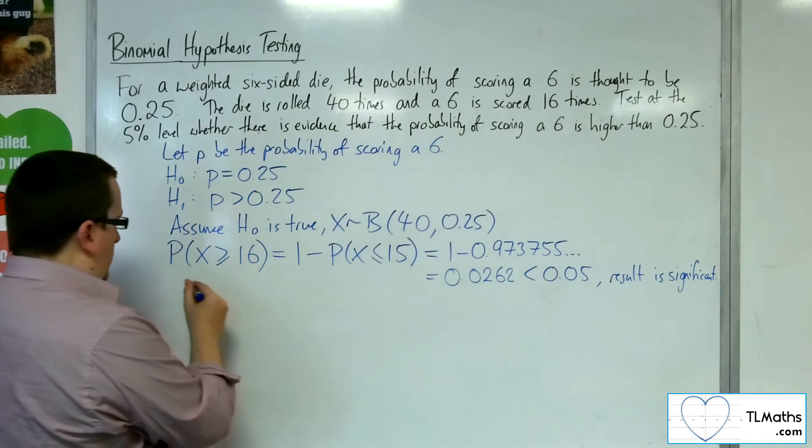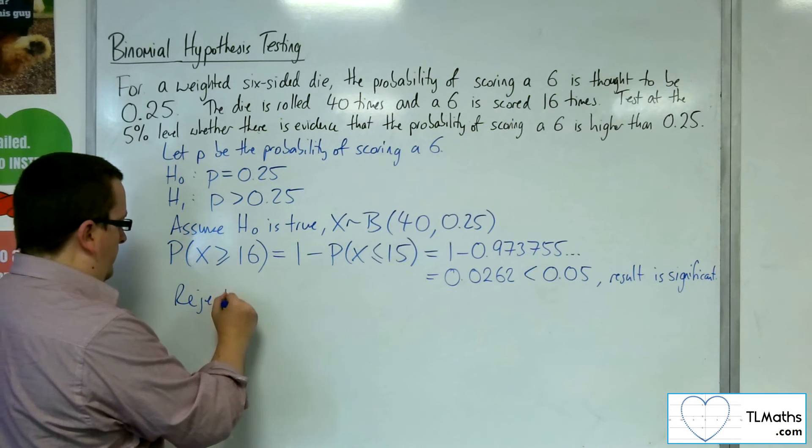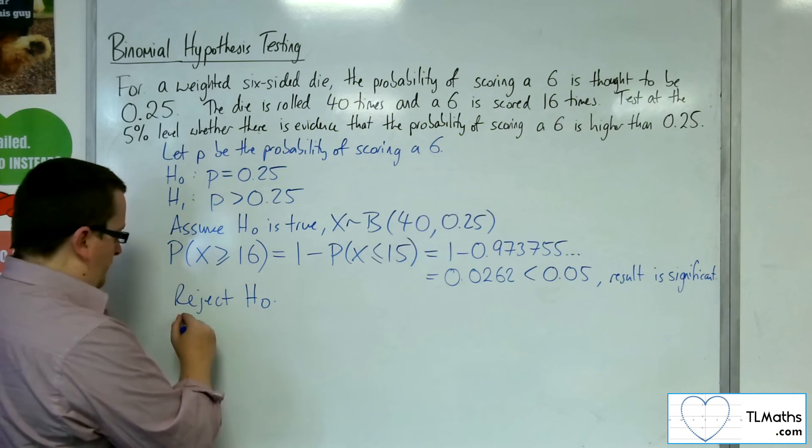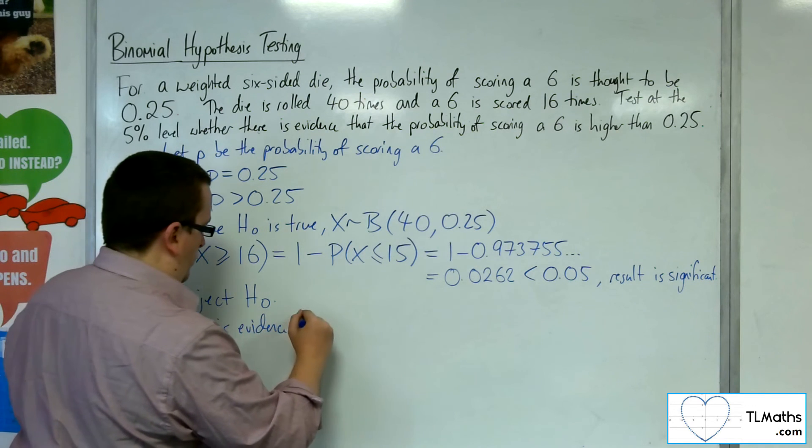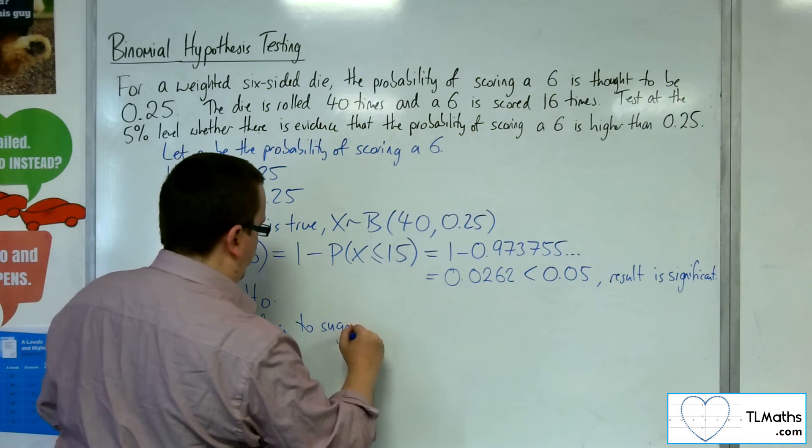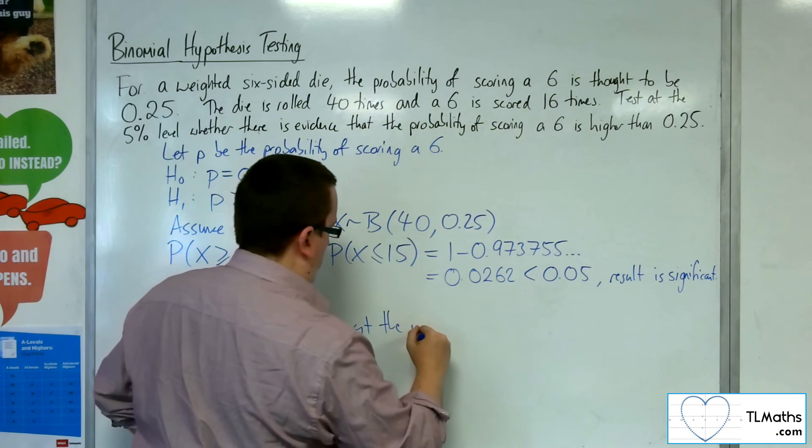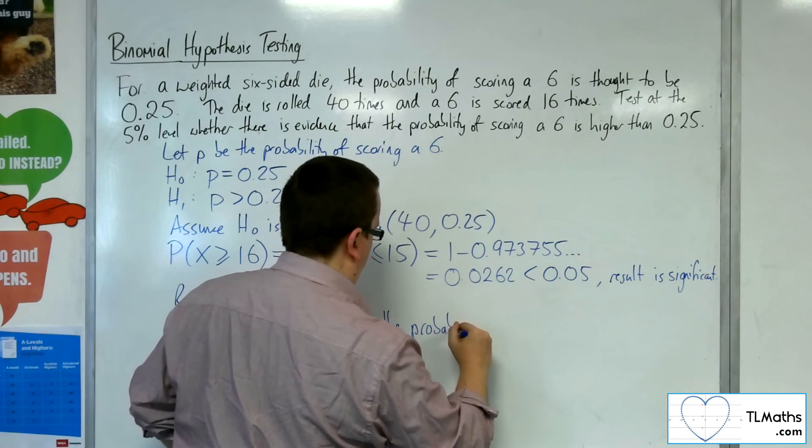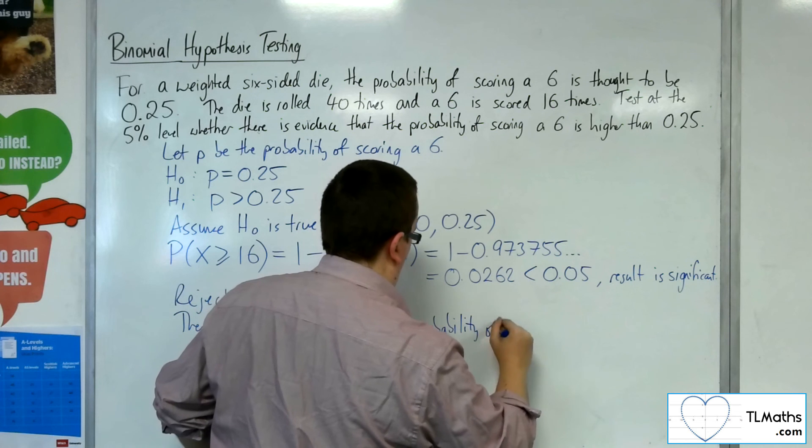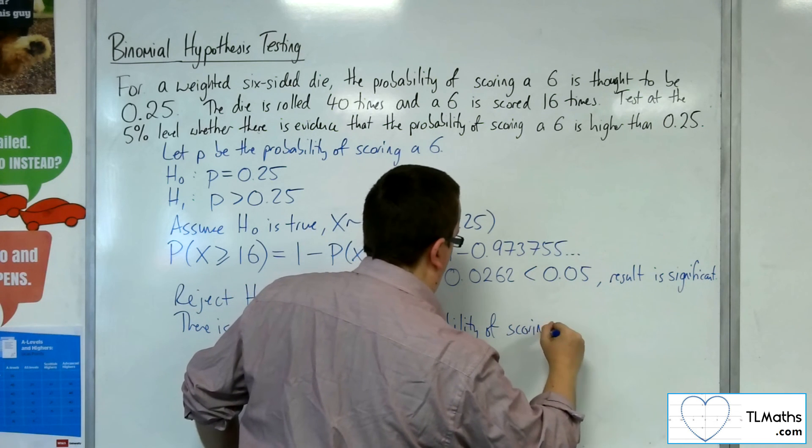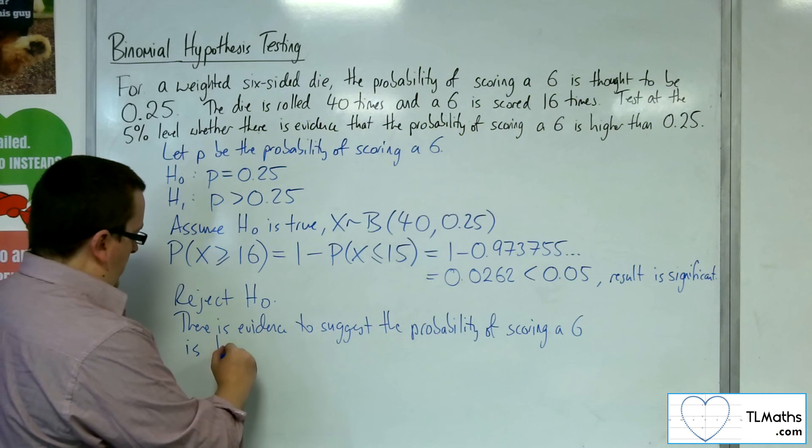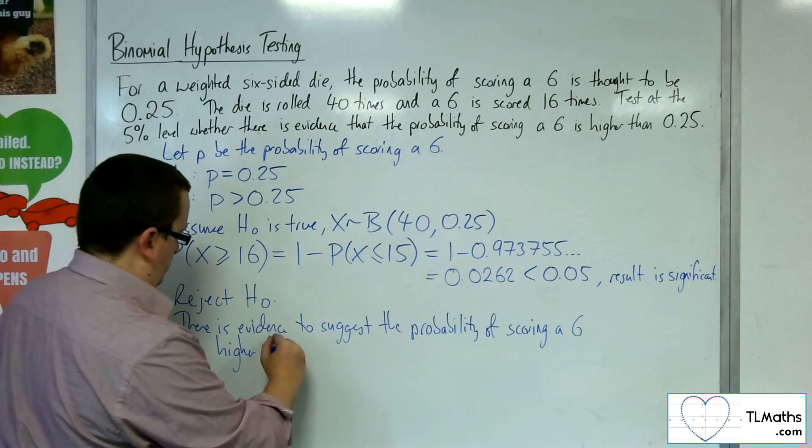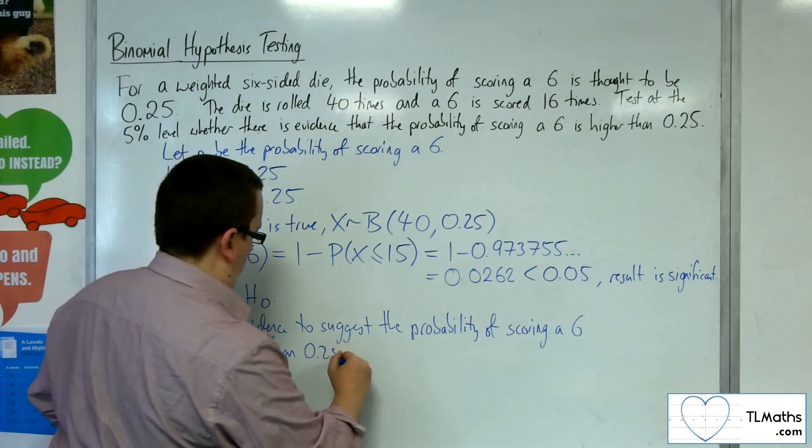And so we can reject H0 and say there is evidence to suggest that the probability of scoring a six is higher than 0.25.